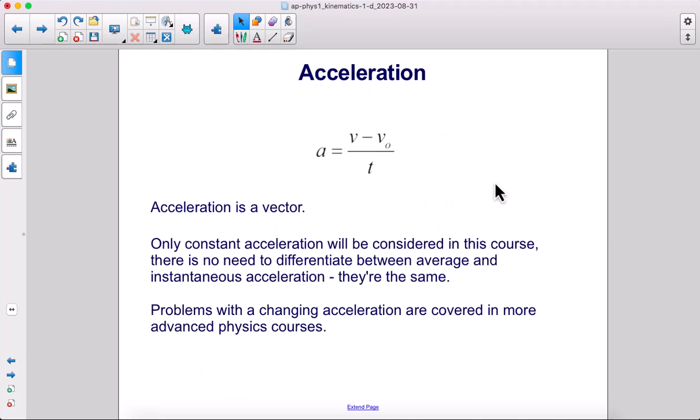Acceleration is a vector. It has a magnitude, an amount, and a direction. Only constant acceleration will be considered in this course. There's no need to differentiate between average and instantaneous acceleration—in this course, they're the same. Problems with changing acceleration are covered in more advanced physics courses like AP Physics C.